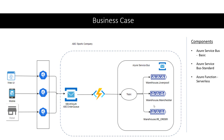We have a company called ABC Sports Company. ABC Sports Company sells sports goods through its retail and online platforms. The orders are submitted from the retail and online platforms using an API, and the order lands in the service bus queue shown here with the name SB UK South ABC Order Queue.